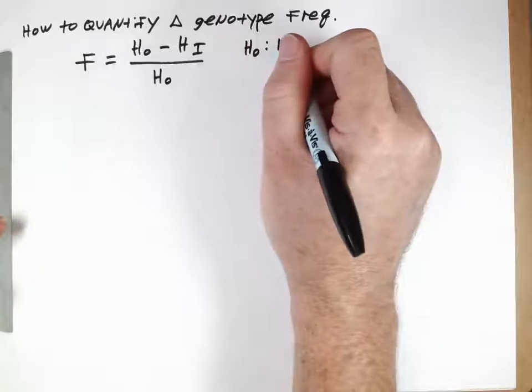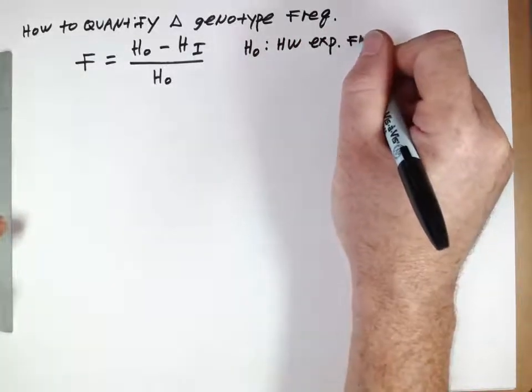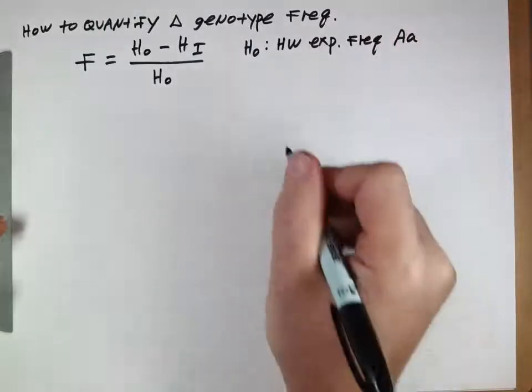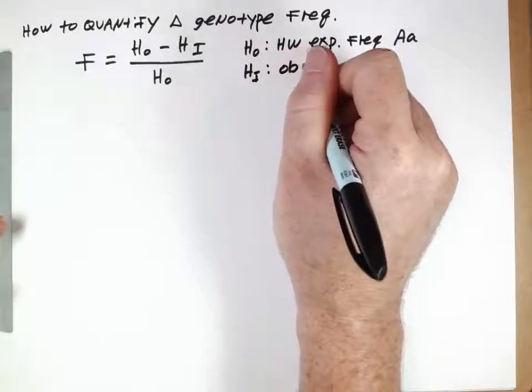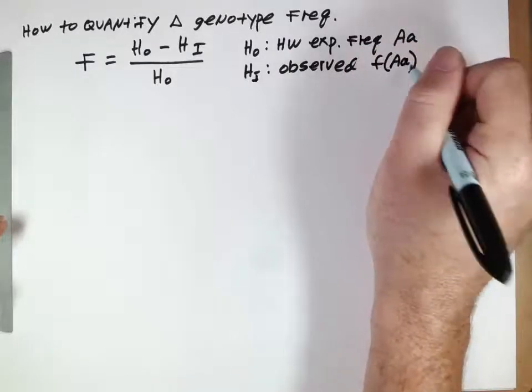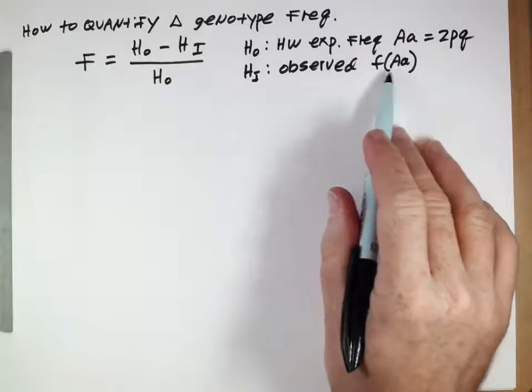HO is going to be the Hardy-Weinberg expected frequency of this genotype, and HI is going to be the observed frequency of this genotype. Of course this is 2pq and this can be whatever we see.